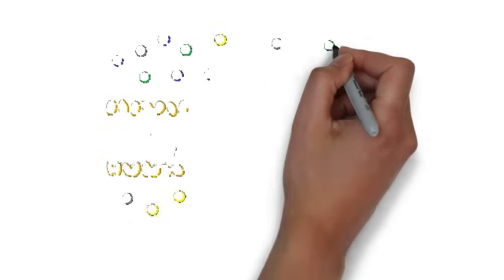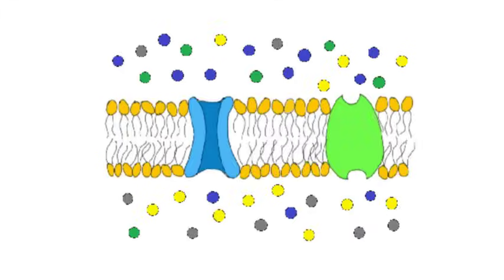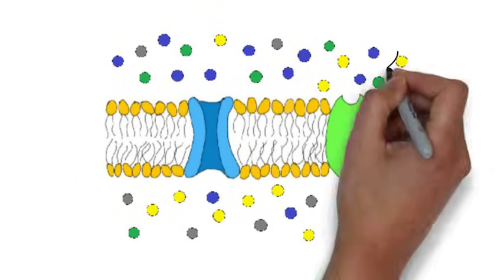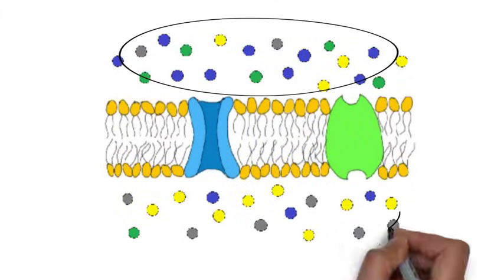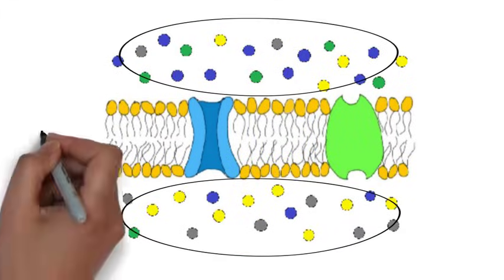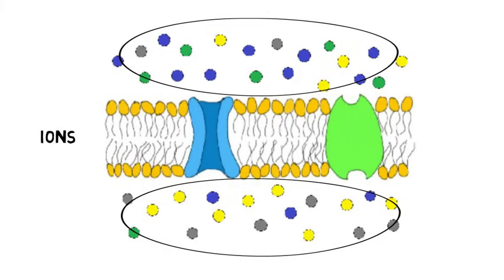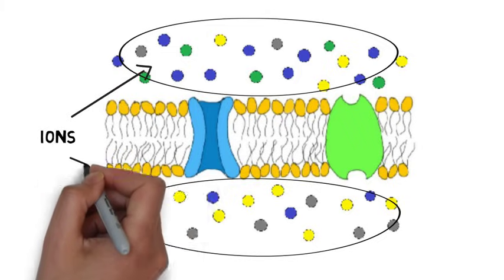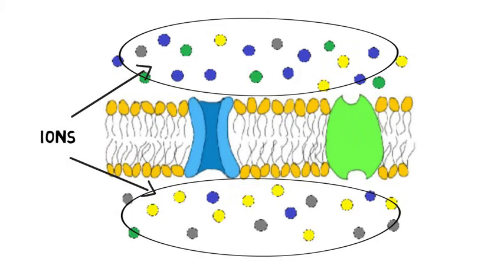The difference in electrical charge develops due to the grouping of ions on the inside and the outside of the membrane. Ions are atoms that have either lost or gained electrons, and thus have a positive or negative charge.